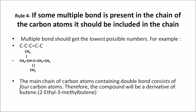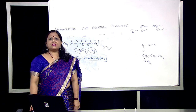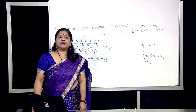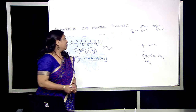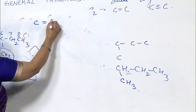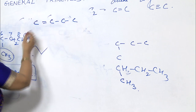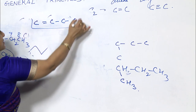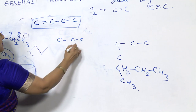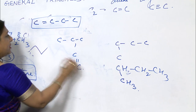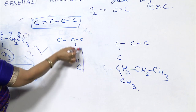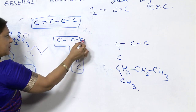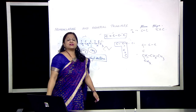Rule number four: if multiple bonds (double or triple bonds) are present in a chain of carbon atoms, the chain containing those bonds must be selected as the parent chain. For example, if a double bond C=C is present in the chain, that chain is selected as the main chain and remaining carbons are treated as substituents or branches.